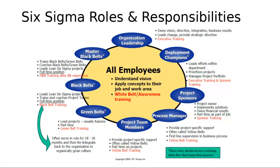Now let's look at Six Sigma roles and responsibilities. Some students have asked about the black belts and green belts. We will demonstrate what the roles and responsibilities are for a Six Sigma project. Depending on how big the project is, the roles of those responsible will vary — sometimes two or three jobs are combined, but this is the ideal situation. You need to identify the role for each one.